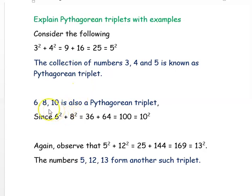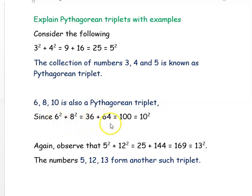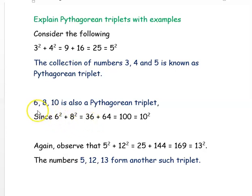The next Pythagorean triplet is 6, 8, and 10. If you see here, 6² + 8² should be equal to 10². Let's check: 6² is 36, plus 8² is 64. So 36 + 64 = 100, which is nothing but 10². Therefore, 6, 8, and 10 is a Pythagorean triplet.